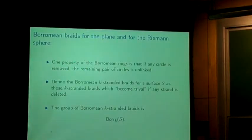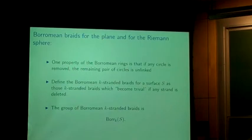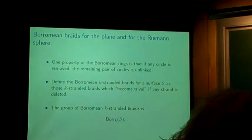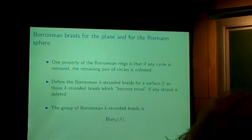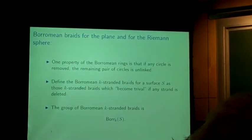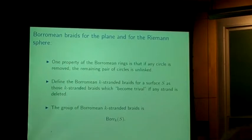I now want to look at something I'll call Borromean creatures rather than Borromean rings — there are other sorts of Borromean objects like Borromean braids. One property of Borromean links is that if you remove any one of the links, what's left falls apart and can be separated. You can also think of the notion of a Borromean braid: if you start off with a braid and remove any strand, you can imagine the braid falling apart. The rest of this lecture is about Borromean braids.